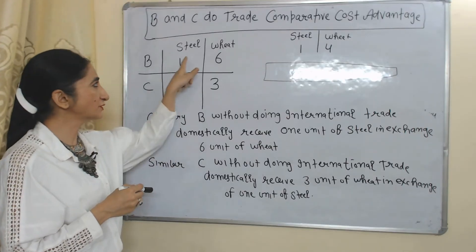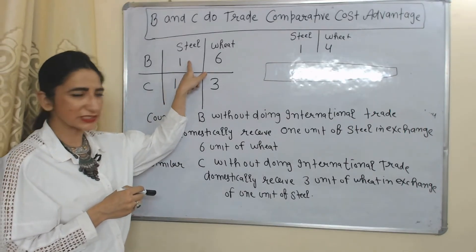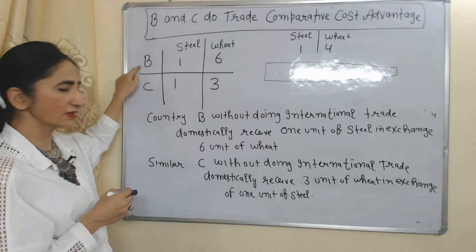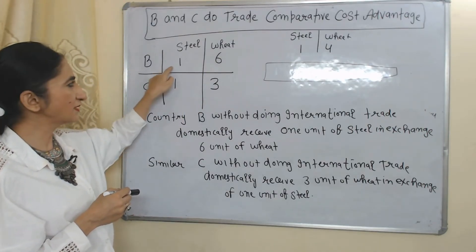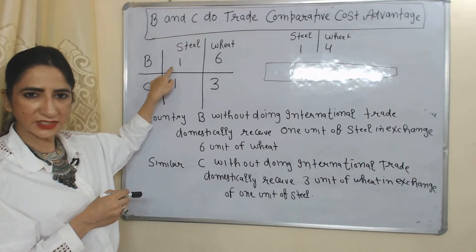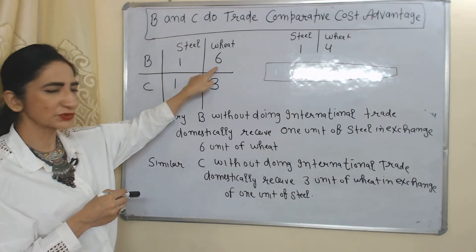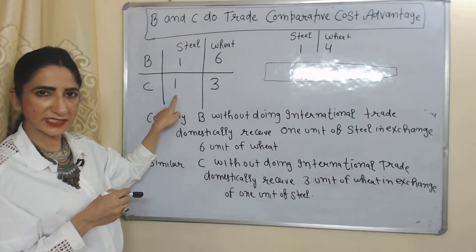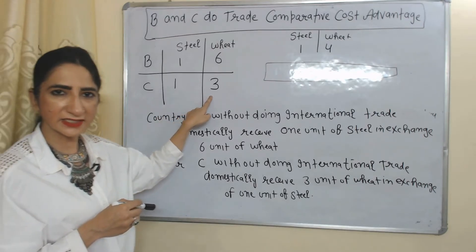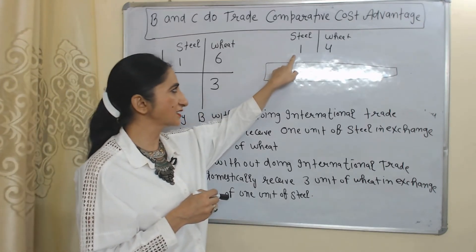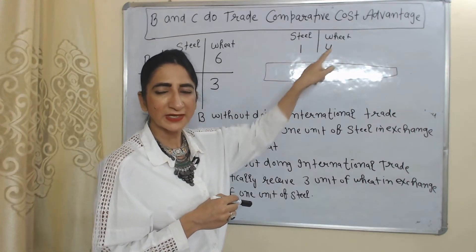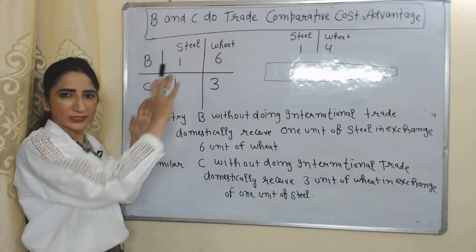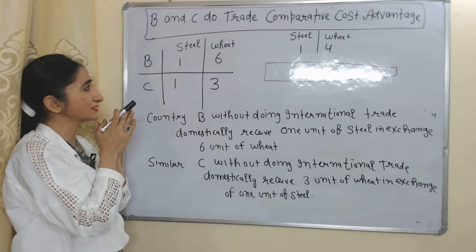In our table, the first column is steel and the second column is wheat, with countries B and C on the side. The domestic exchange ratio in country B is 1:6, and the domestic exchange ratio in country C is 1:3. The international exchange ratio is 1:4. That means country B, without doing international trade, domestically receives one unit of steel in exchange for six units of wheat.